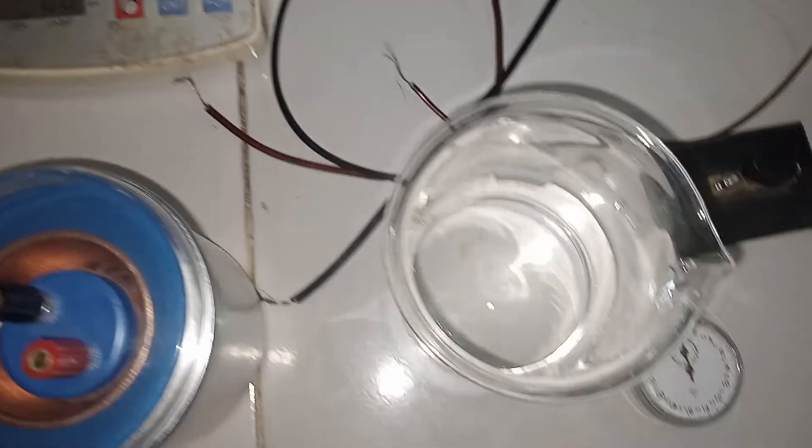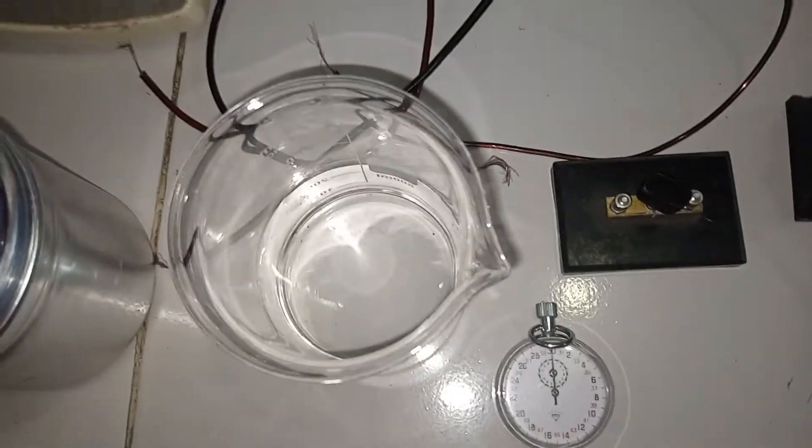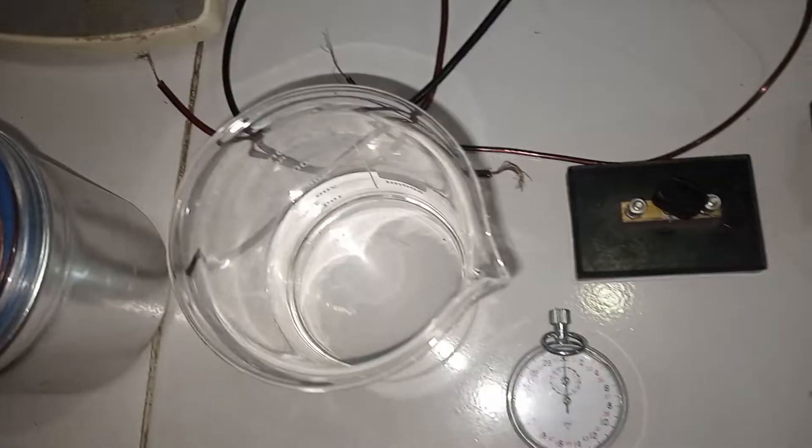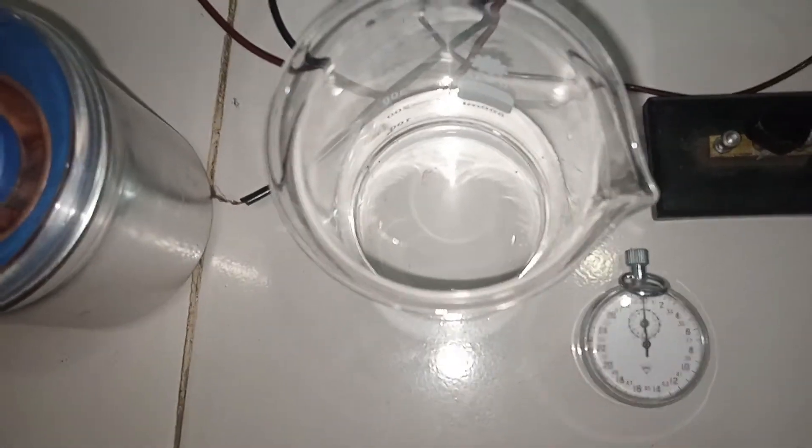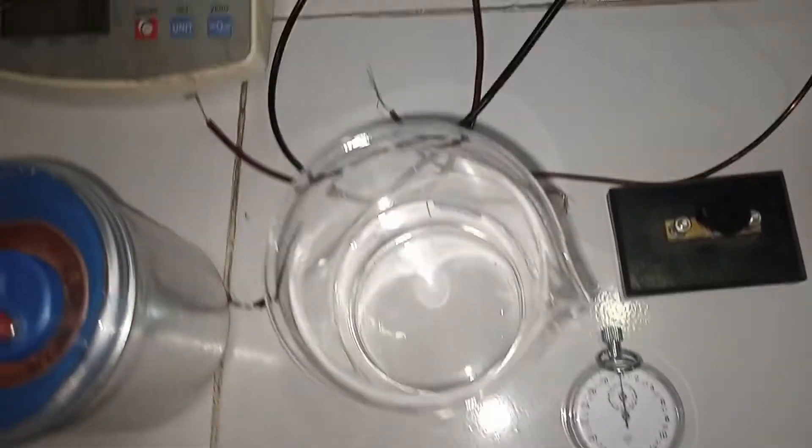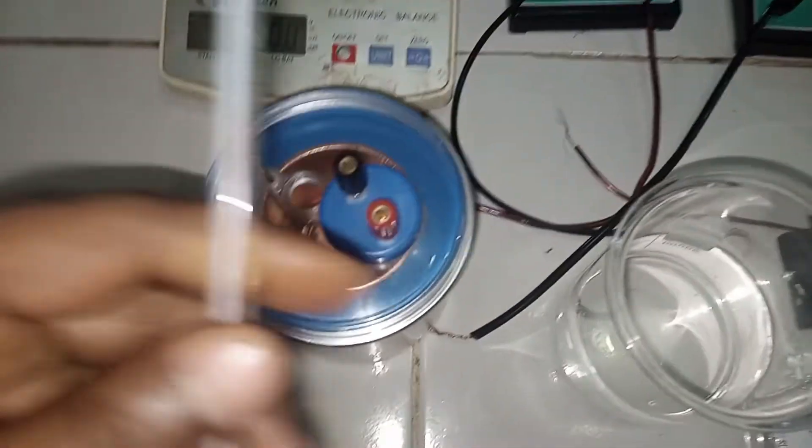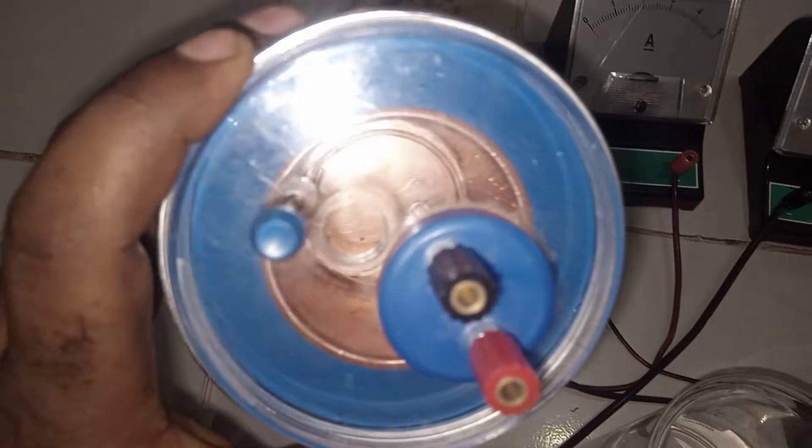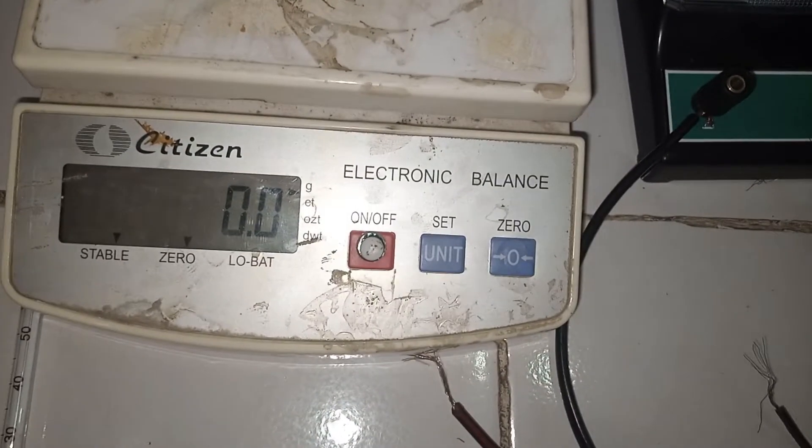Before we proceed we would first of all want to find three things. One, the mass of the water that we want to use. Then we'll also find the initial temperature of the water before we even begin the experiment. So let us find the mass of the water. We have a calorimeter here. Let me remove the thermometer. Right, so we will weigh this calorimeter empty. It is empty as you can see from here, no water inside yet.